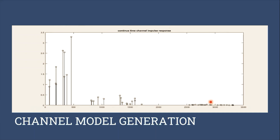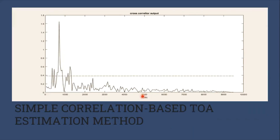In this step, phase rotation of each path is modeled in the channel model. This figure represents a sample continuous time channel model. The outputs of this statistical model are two vectors. As a result, we have a continuous model for our indoor multipath wireless channel. In the simple correlation-based TDOA estimation method, cross correlation between the transmitted signal and the received signal is implemented using the xcorr command in MATLAB. We calculate the absolute value of the output, which is a complex number, and the first arriving peak is estimated by comparing this with a certain threshold.